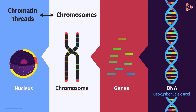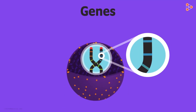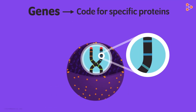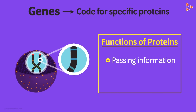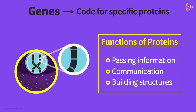Now, this was about why the nucleus is called the major organelle. But how does the system of regulation work? That happens with the help of proteins. The genes present in the nucleus code for specific proteins. These proteins perform various functions found in the cell — from passing information, communication, or even building structures. All these are carried out by specific proteins. That is how the nucleus helps in regulating the various functions of the other cell organelles.